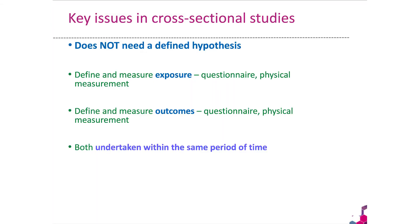Key aspects of cross-sectional studies: they don't necessarily need a defined hypothesis — we can collect data on anything we think relevant. We need to define and measure exposures, often using a questionnaire or physical measurements. We also need to define and measure outcomes clearly. In analytical studies, both exposure and outcome information are collected in the same period of time.